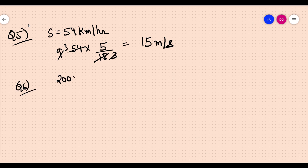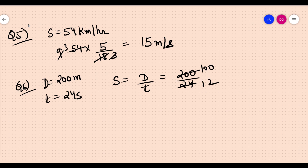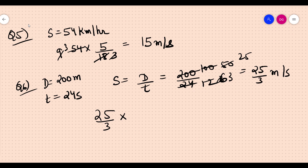Question six: An athlete runs 200 meters in a race in 24 seconds. Find the speed: distance upon time equals 200 upon 24, which simplifies to 25 upon 3 meters per second. Converting to kilometers per hour: 25 upon 3 into 18 upon 5 gives 30 kilometers per hour.